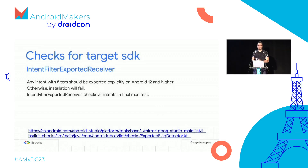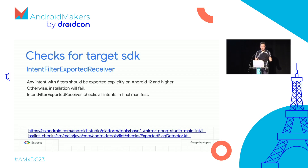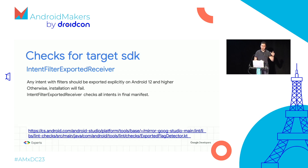Lint can also help you update your target and compile SDK. There are lots of behavior changes in every Android release, and it's difficult to keep track of them. For example, if your intents have any filter, they need to have an export tag for better security — you need to specifically say whether you'd like to export the intent or not. Even if you have a library with an intent filter, this lint rule will tell you which intents need those export tags added. If not, there will be runtime crashes.